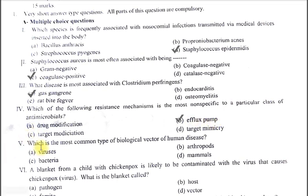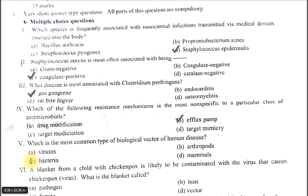Which is the most common type of biological vector of human disease? A. Viruses. B. Arthropods. C. Bacteria. D. Mammals. The correct option is B, arthropods. Arthropods are the insects which can cause a number of infections.